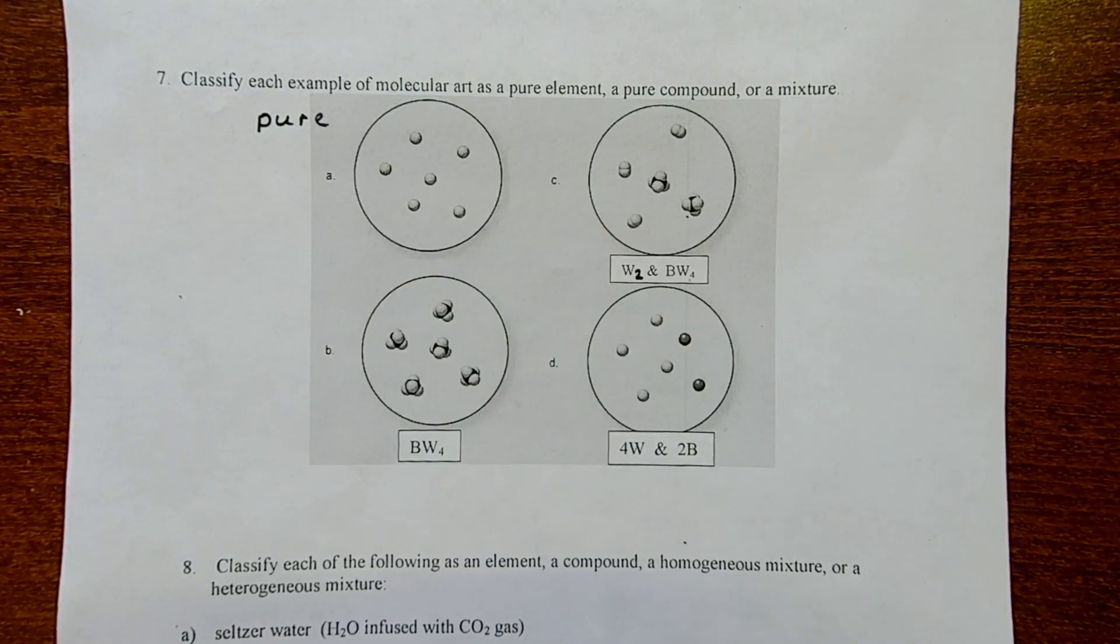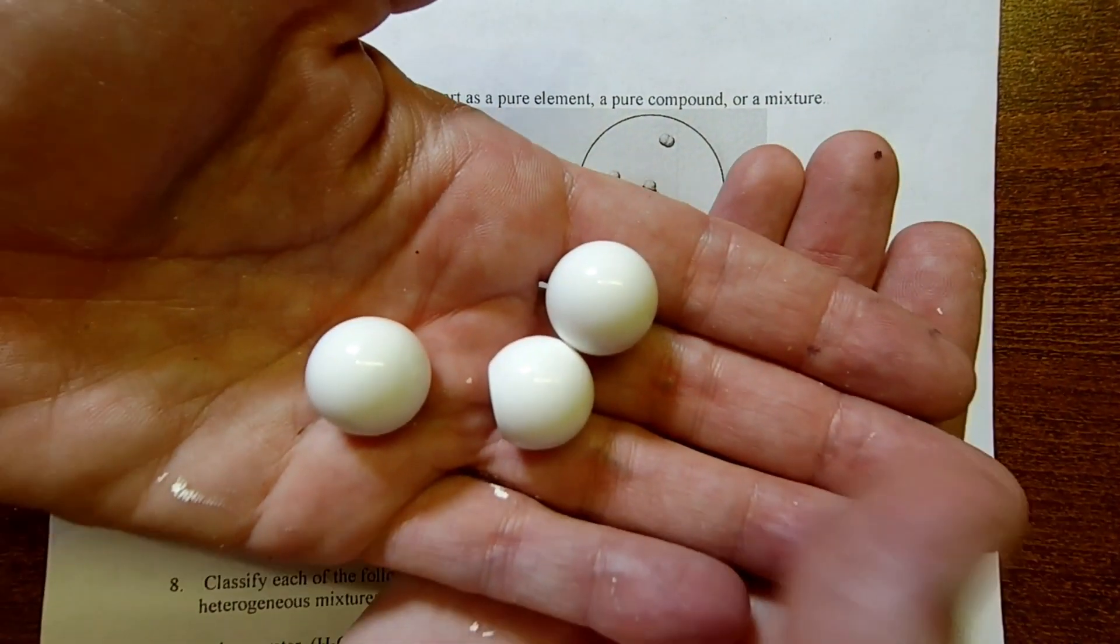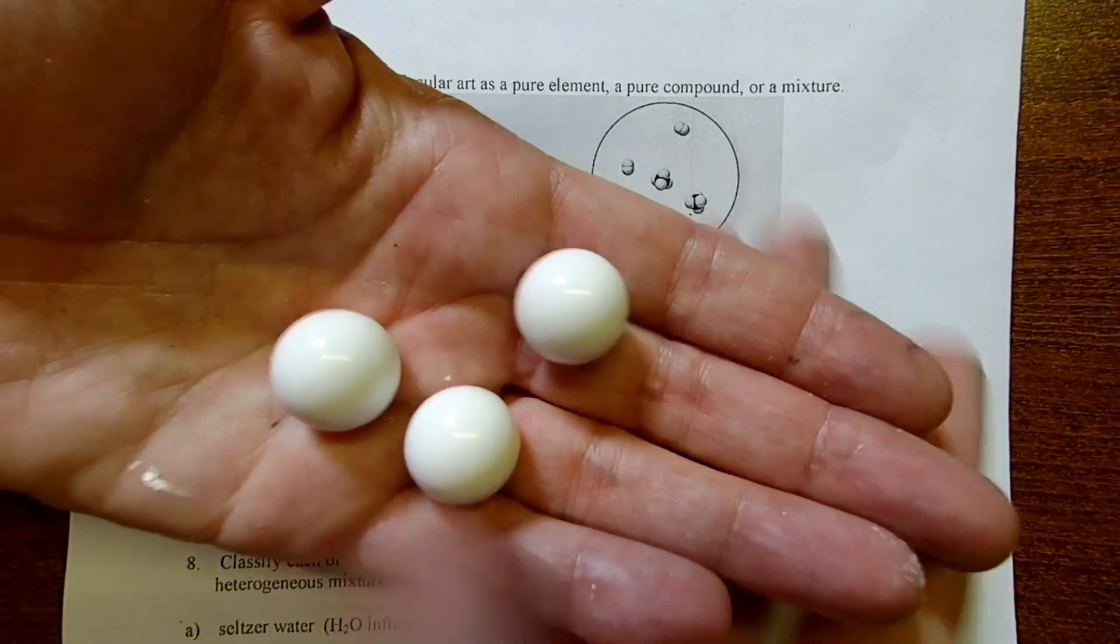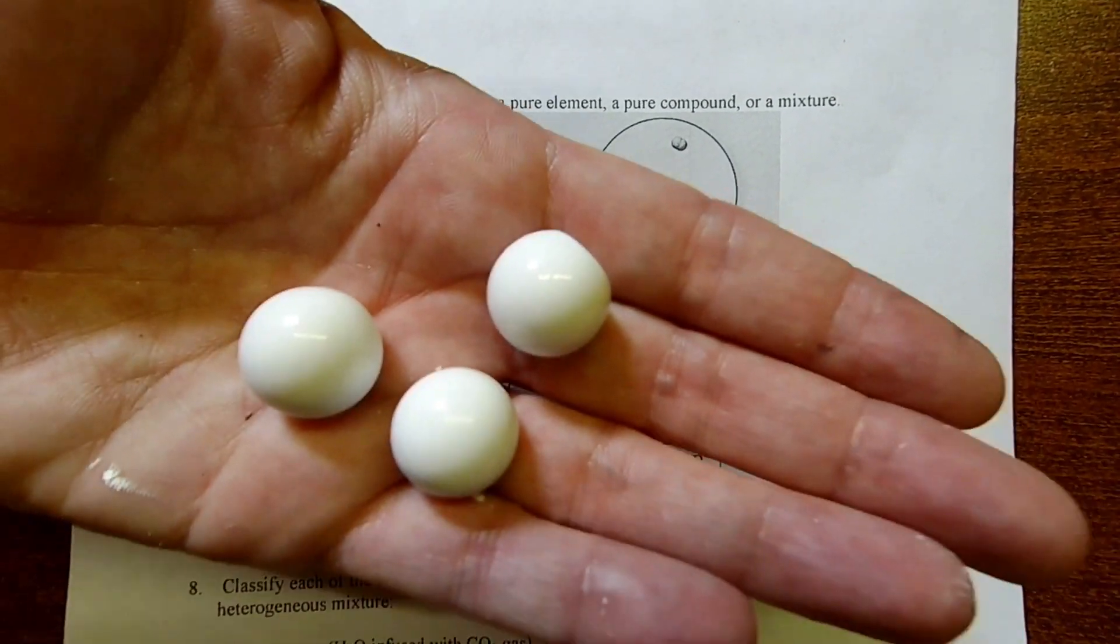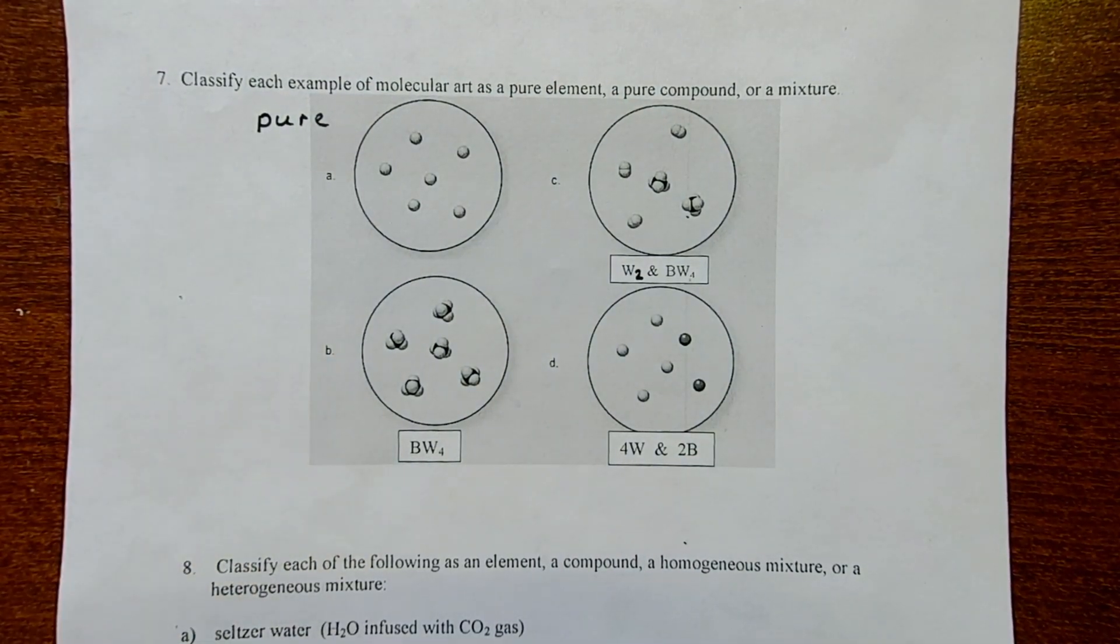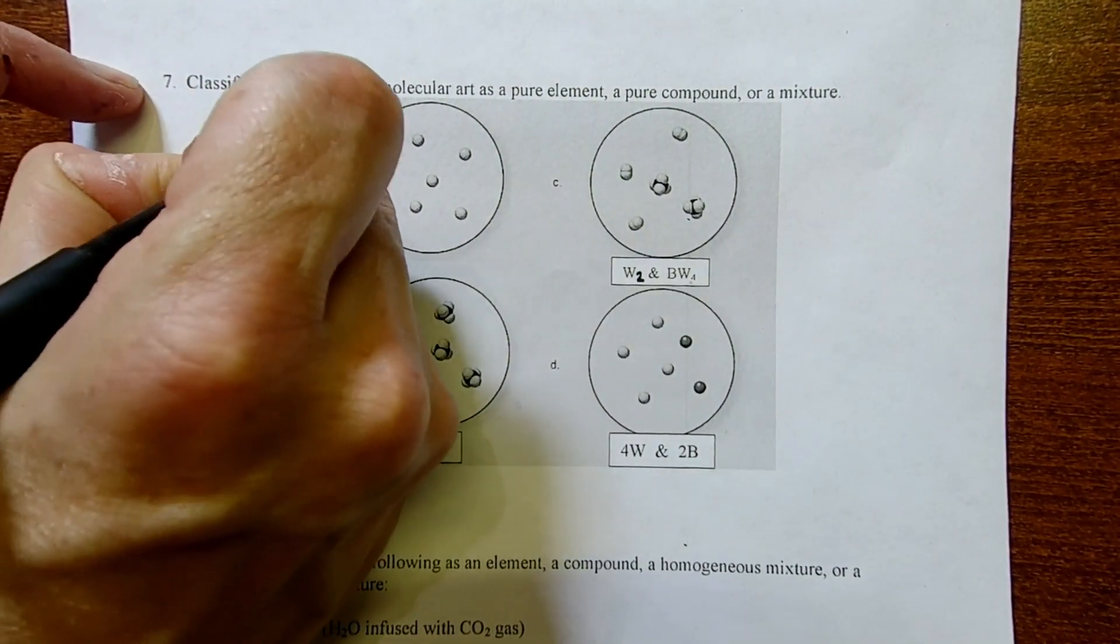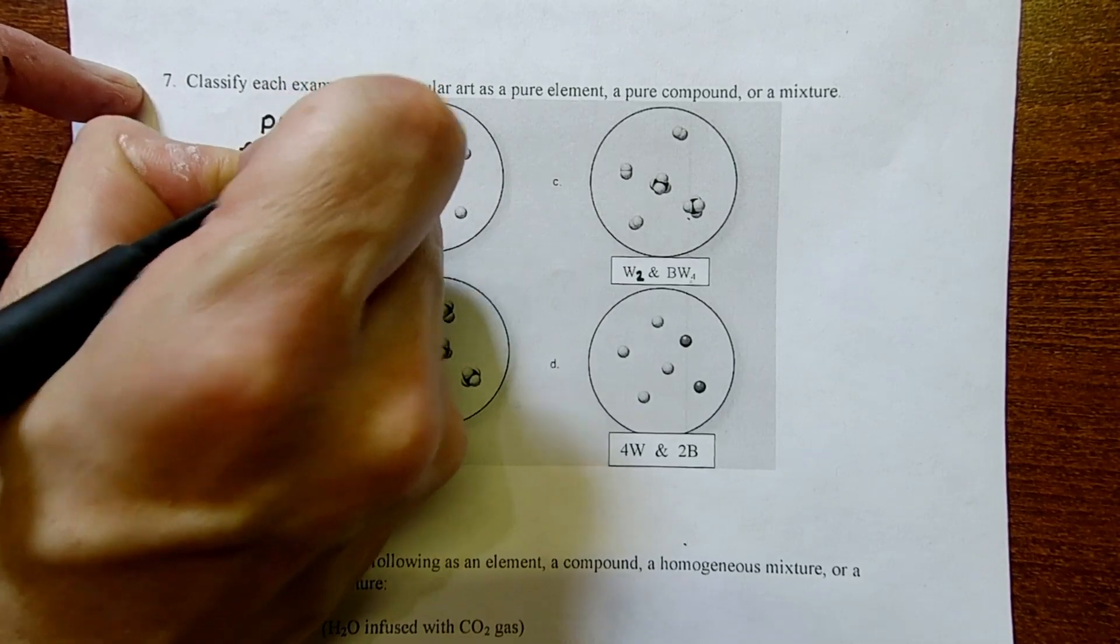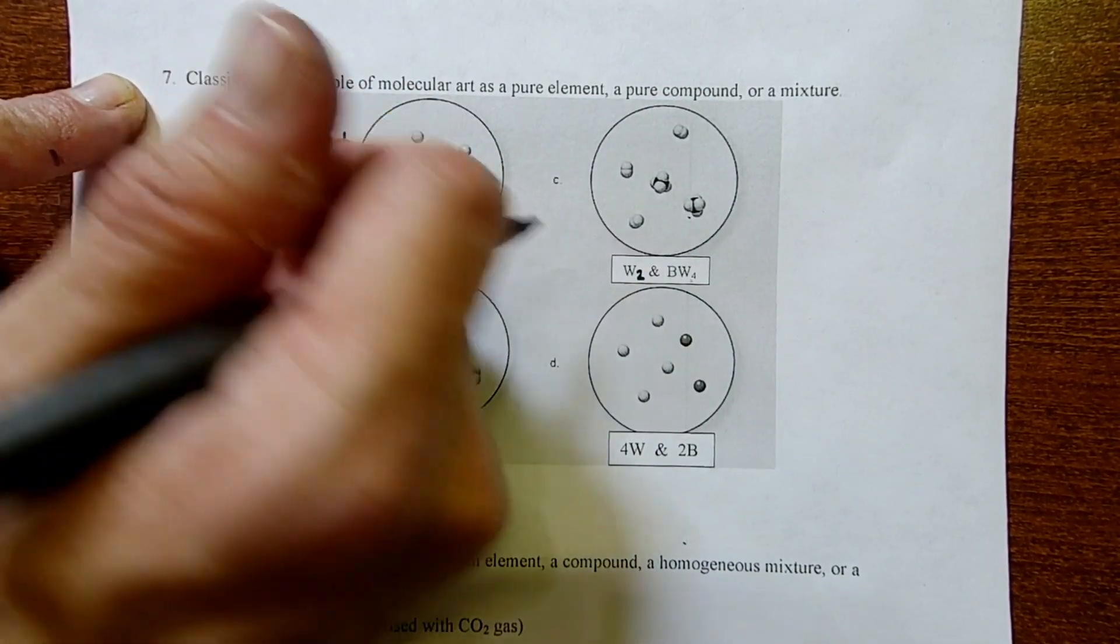In question seven, we have a bunch of classification to do. In letter A, we have a pure compound because there's only one type of thing present in the picture, just a bunch of white spheres. It's also elemental in nature. The way we know that it's an element is because we're looking at single atoms. Only elements exist as single atoms.